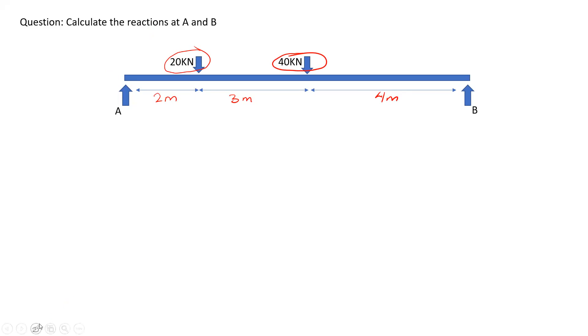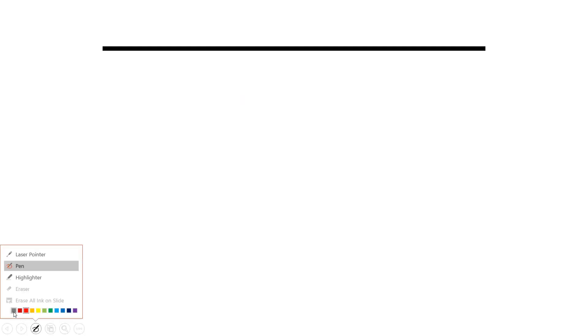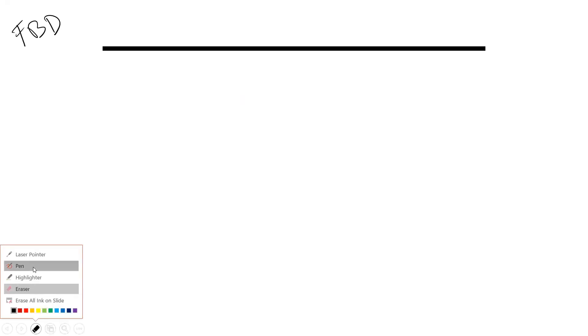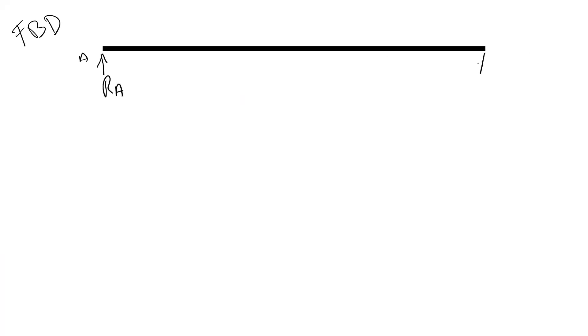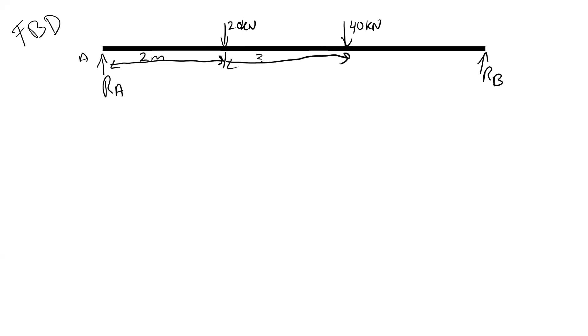First, let's construct a free body diagram. We have a reaction at A acting upwards and a reaction at B acting upwards. We have a 40 kN force acting downwards and also a 20 kN force acting downwards. This distance is 2 meters, 3 meters, and this distance is 4 meters.